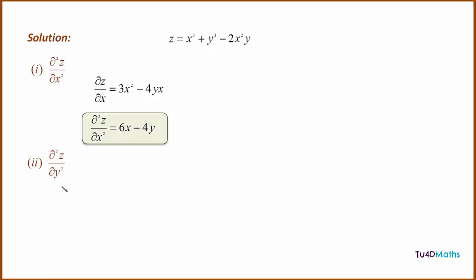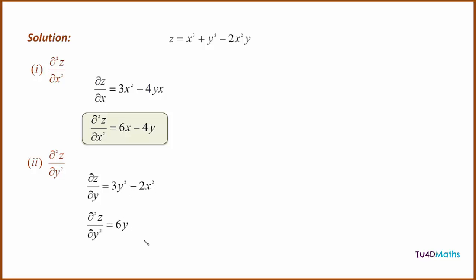Next we want to calculate the second-order partial derivative d²z/dy². First we calculate the first-order partial derivative dz/dy by differentiating z with respect to y keeping x constant. Differentiating x cubed gives zero, differentiating y cubed gives 3y squared, and differentiating minus 2x squared y gives minus 2x squared. We then differentiate again keeping x constant: differentiating 3y squared gives 6y, and differentiating minus 2x squared gives zero because x is a constant. So d²z/dy² equals 6y.